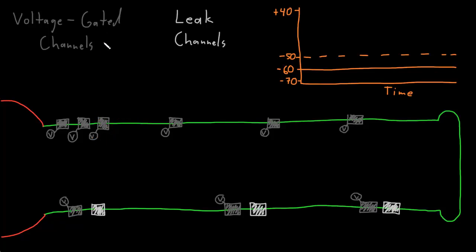These are voltage-gated ion channels. The membrane of an axon has many voltage-gated ion channels, most of which open when the membrane potential crosses a threshold value. All of these numbers may vary between different types of neurons, but common values would be a resting membrane potential of around negative 60 millivolts and a threshold potential of around negative 50 millivolts, drawn with the dashed line.